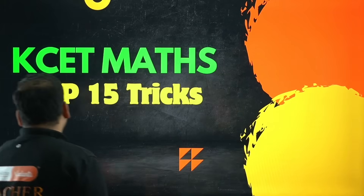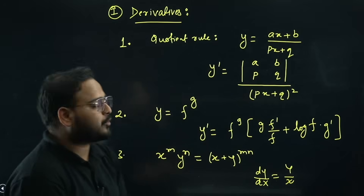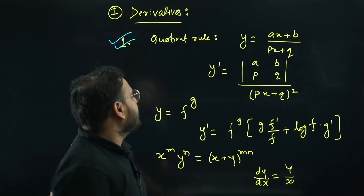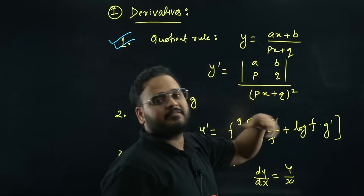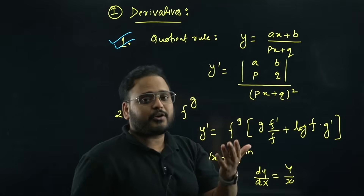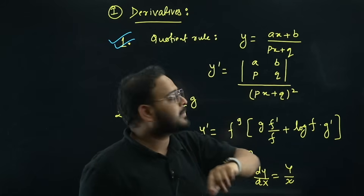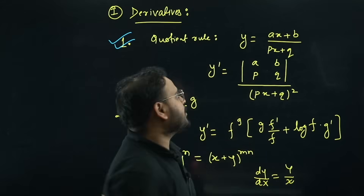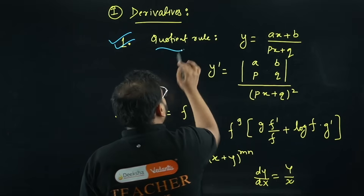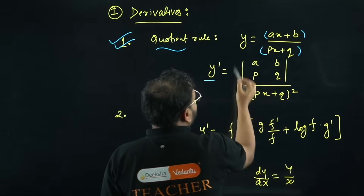Let's start. The first chapter is derivatives, with three important tricks. The first trick is extremely relevant — we see these questions often, sometimes as a derivative, sometimes across different calculus problems. Even in integration, if you were part of a KSET test series, you would have seen a question involving a quotient rule derivative inside integration.